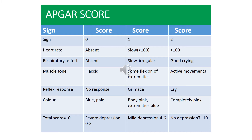The next important step is the Apgar score, taken soon after birth to assess the physical condition of the baby. Certain signs are observed: heart rate, respiration, muscle tone, reflexes, and color of the infant. Each sign is given a score of 0, 1, or 2. The perfect score is 9 or 10. If heart rate is absent, respiratory effort absent, muscle tone flaccid, reflex response absent, and baby is cyanosed, the Apgar score is 0 to 3, indicating a severely depressed baby.